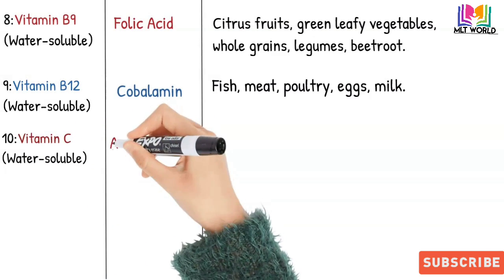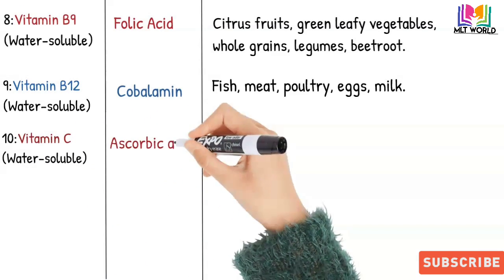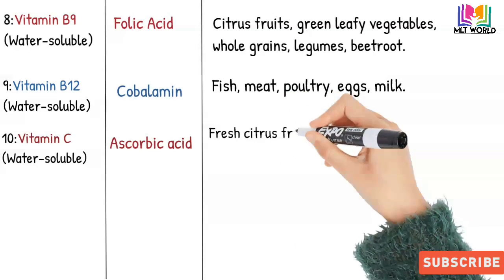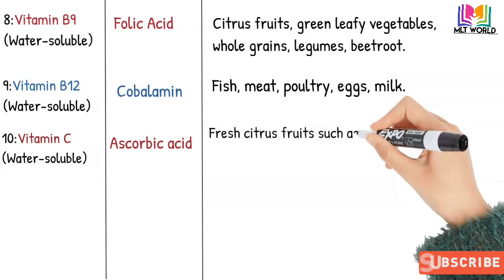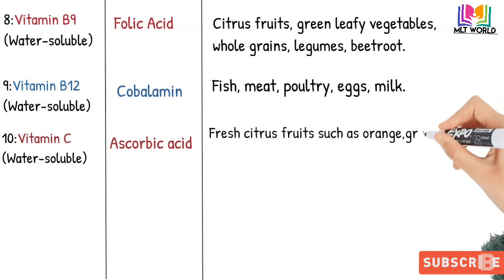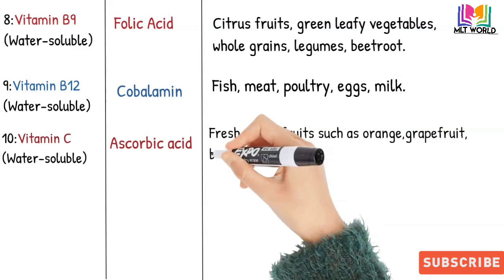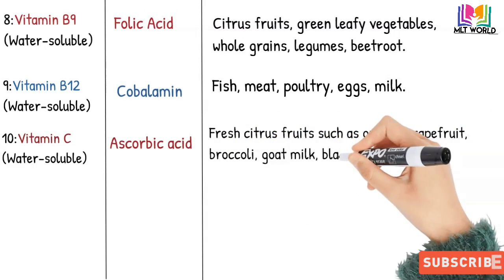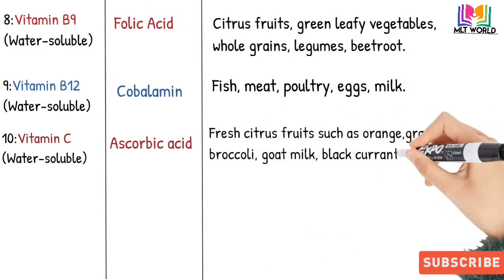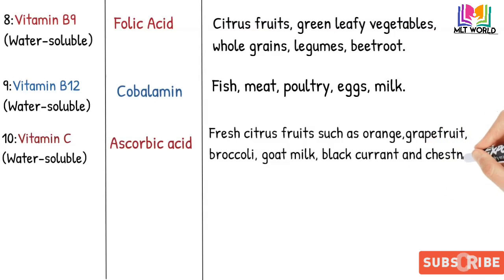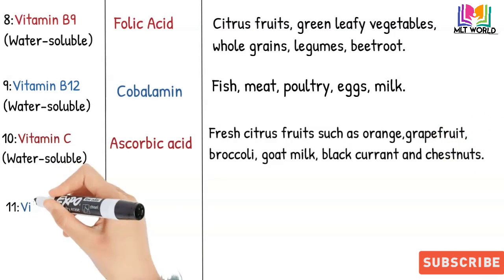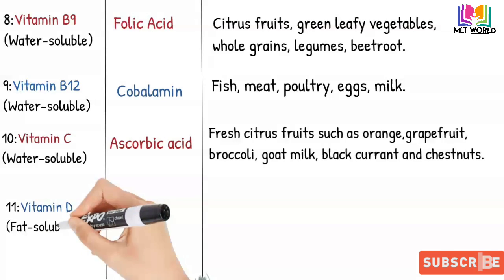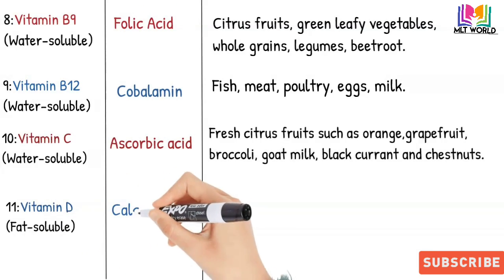Next is Vitamin C, which is also water-soluble. Its scientific name is ascorbic acid. Sources include fresh citrus fruits such as oranges, grapes, grapefruit, broccoli, goat milk, black currant, and chestnuts.